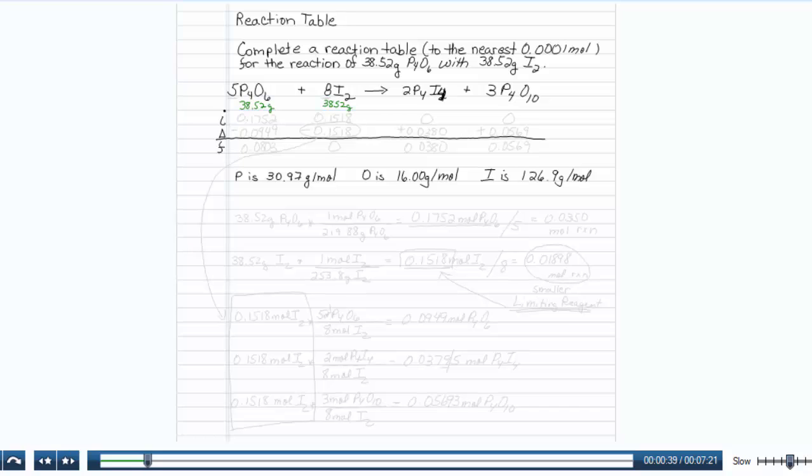To find the limiting reactant, we need to figure out which one does the least amount of reaction. So let me take my 38.52 grams of P4O6 and figure out how many moles that involves.